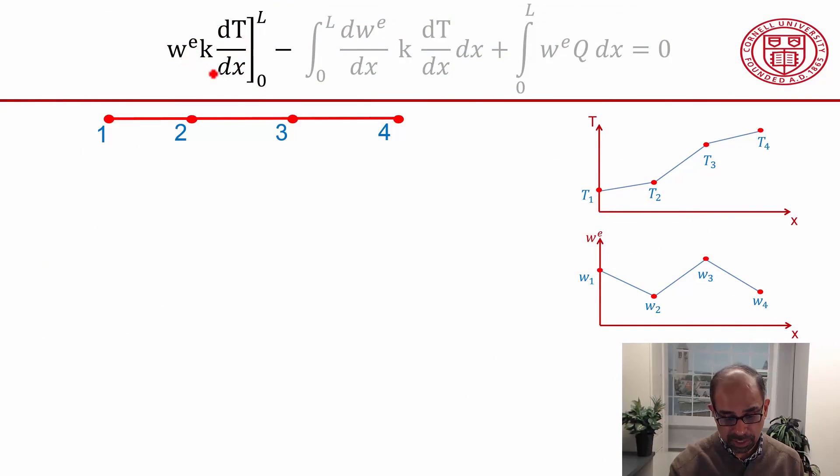Let's consider the first term in the weak form here. I've grayed out the other terms and we are focusing on this term. I need to evaluate this at x equal to L, which is the right boundary, and W at the right boundary is just W4. That's a constant. And dT/dx at x equal to L is just the value at node 4. And then I need to evaluate it at the left boundary and I'll get a corresponding term.